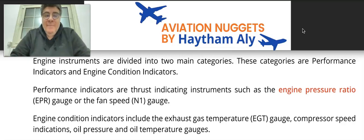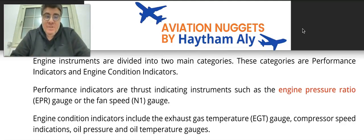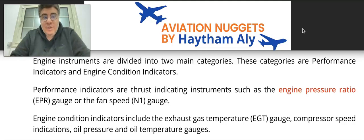For example in Airbus, everybody has engine indication on an upper E-CAM and lower E-CAM. On the upper E-CAM engine and warning display, you have EPR, N1, N2, EGT, and fuel flow — those are the primary engine indication parameters sent directly to the upper E-CAM engine and warning display.